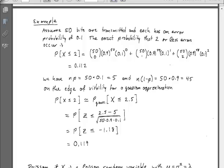Let's talk about another example. We'll do a little example of taking the binomial to a Gaussian. If we have 50 bits transmitted with an error probability of 0.1 for each bit, we know the expected number is 50 times 0.1.